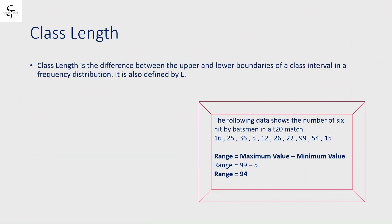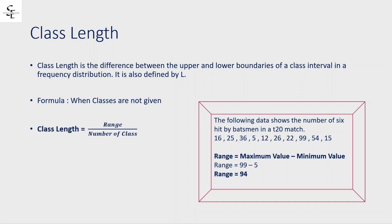Class length is the difference between the upper and lower boundaries of a class interval in a frequency distribution, also denoted by the capital letter L. When the classes are not given, the formula is: class length = range / number of classes. We have obtained range = 94, and we assume the number of classes is 6, so class length = 94 / 6 = 15.6667.